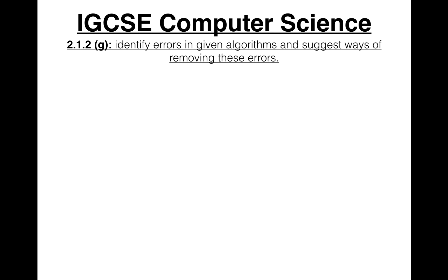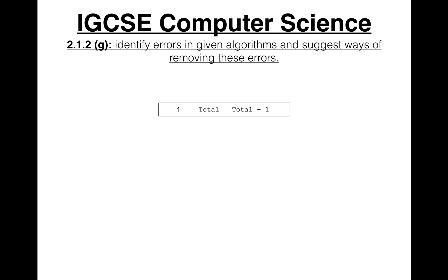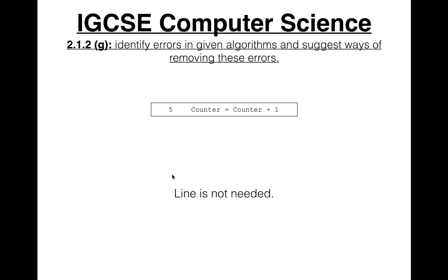We have a for loop, which means we don't need to increment counter inside the loop because the for loop already does this via `next counter` on line 7. So you can say: 'Correction for line 5 — remove this line, it is not needed.'